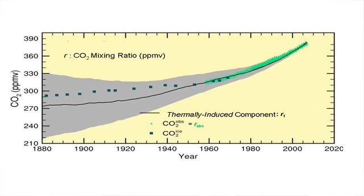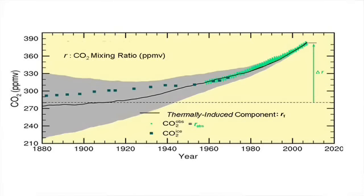We're interested in the increase of CO2 from values in the 19th century — about 280 ppmv. The part from thermally induced CO2 lies somewhere in the shaded area, and its discrepancy from observed CO2 isolates anthropogenic CO2. The smallest possible increase of thermally induced CO2 corresponds to the largest possible increase of anthropogenic CO2, providing an upper bound: the anthropogenic fraction of increased CO2 must be smaller than 33%.